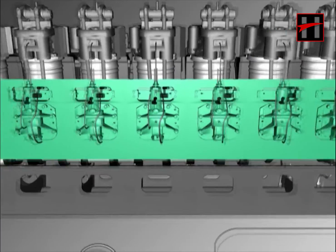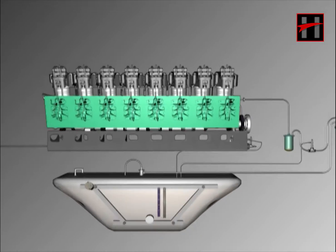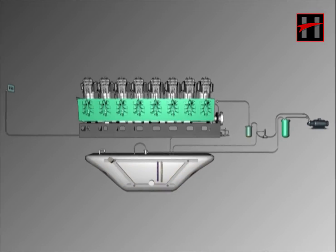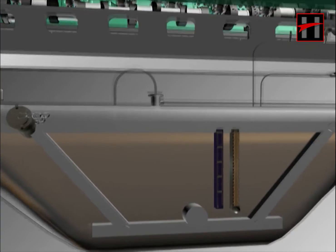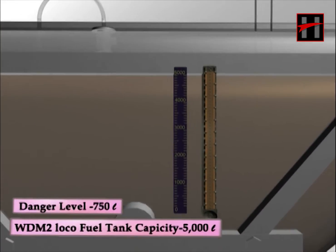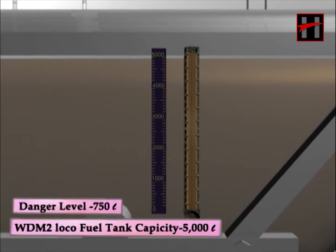This is the fuel oil system of the diesel locomotive. Before starting the fuel booster motor, ensure that the level of the fuel in the fuel tank is above the danger level.